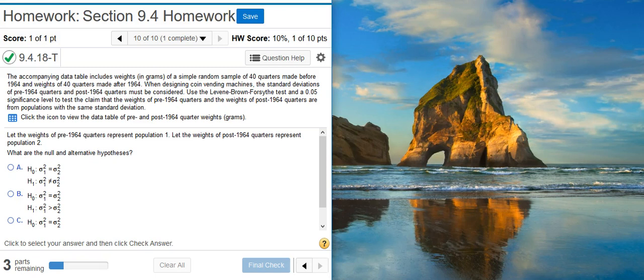Use the Levene-Brown-Forsythe test and a 5% significance level to test the claim that the weights of pre-1964 quarters and the weights of post-1964 quarters are from populations with the same standard deviation. The first part of this problem asks us for the null and alternative hypotheses. We're asked to let the weights of pre-1964 quarters be population 1 and the weights of post-1964 quarters represent population number 2.